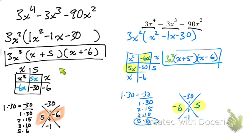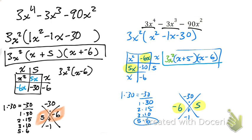You can see I got the same answer both ways. You can also write the binomials in a different order — 3x squared times (x minus 6) times (x plus 5) — because multiplication is commutative. And that's how you completely factor a polynomial like this.